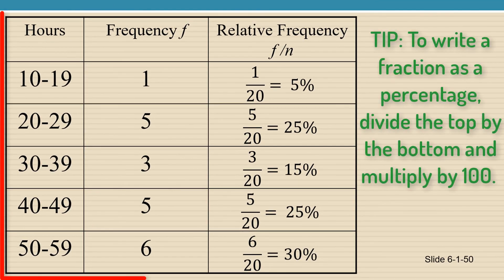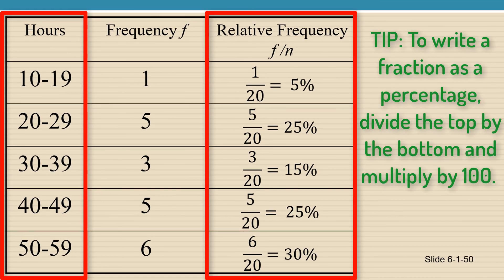So here's our final frequency and relative frequency distribution. The first two columns are the frequency distribution. The first and third columns are the relative frequency distribution.